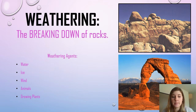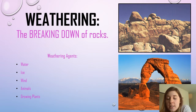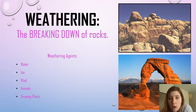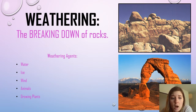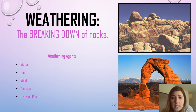Let's talk about some examples. Weathering — the breaking down of rocks — can happen with water, ice, wind, animals, or growing plants. Here you can see some pictures of weathering. It's crazy the rock formations that occur from weathering. These could be examples from a mixture of these agents. This bottom one's probably wind; that top one looks like plants, water, and wind.